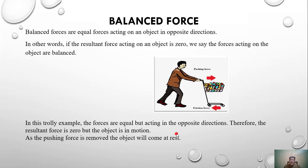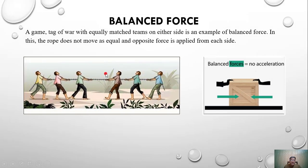One more example of balanced force: a game of tug of war with equally matched teams on either side. Both teams apply the same force in opposite directions, so the rope does not move. This is an example of balanced force — no movement, the rope stays at rest, and no acceleration is acting.